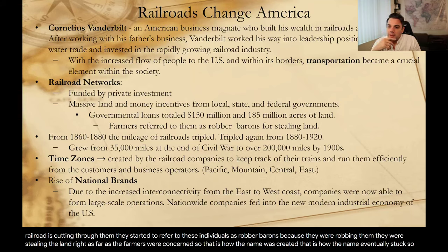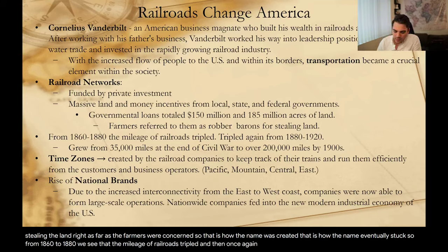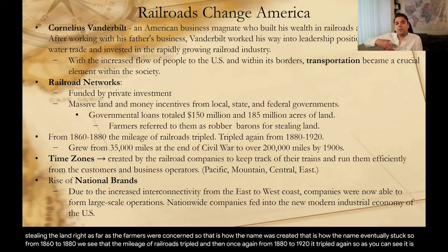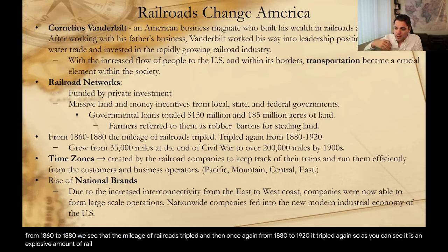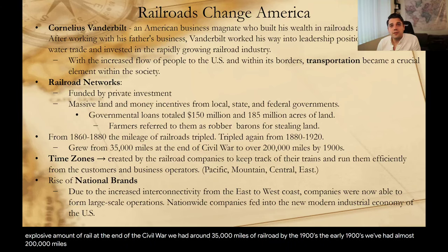From 1860 to 1880, the mileage of railroads tripled. Then from 1880 to 1920, it tripled again — an explosive amount of rail. At the end of the Civil War, we had around 35,000 miles of railroad. By the early 1900s, we had almost 200,000 miles of railroad, an enormous continuation.